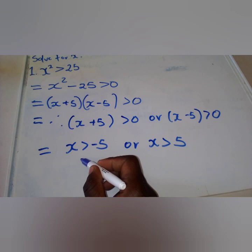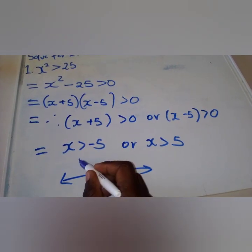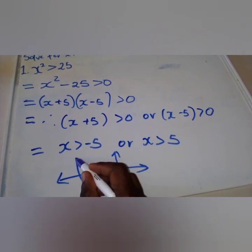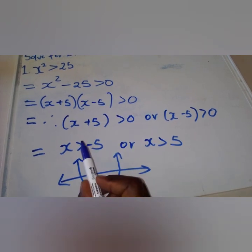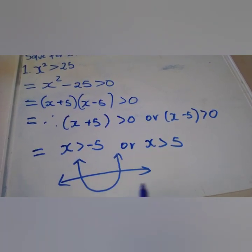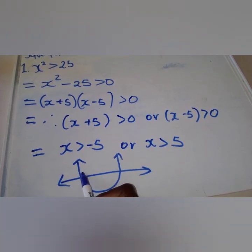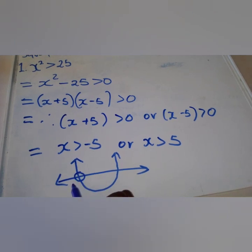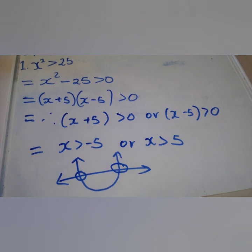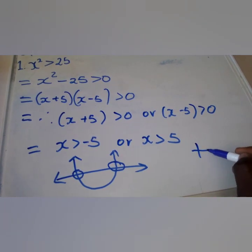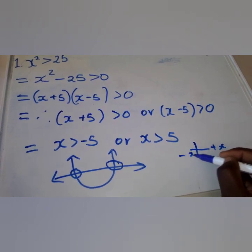They may ask you to represent your answer graphically. We use the parabola to do it, though you can also use a number line. Since we have strictly greater than, we use an open dot — we do not shade it. If it were greater than or equal to, that is when we would use a closed dark dot.